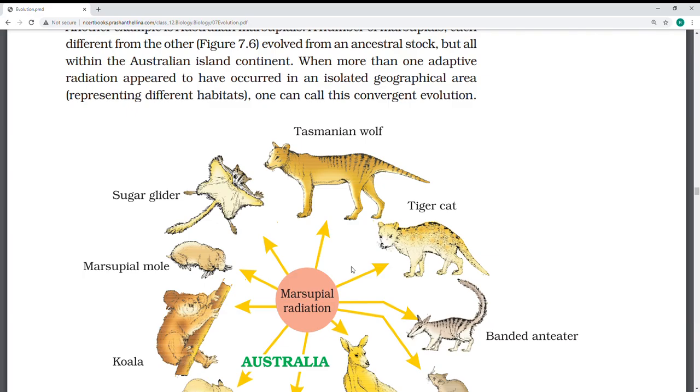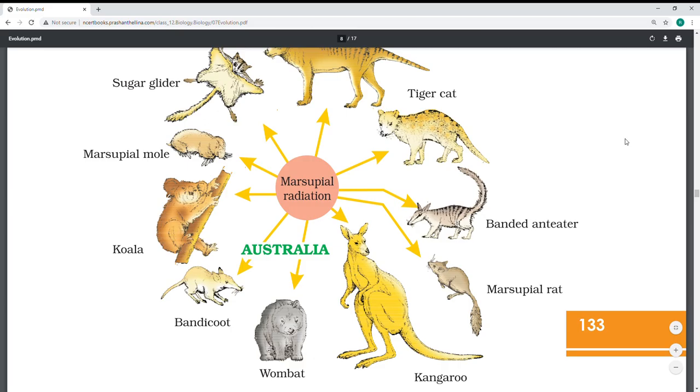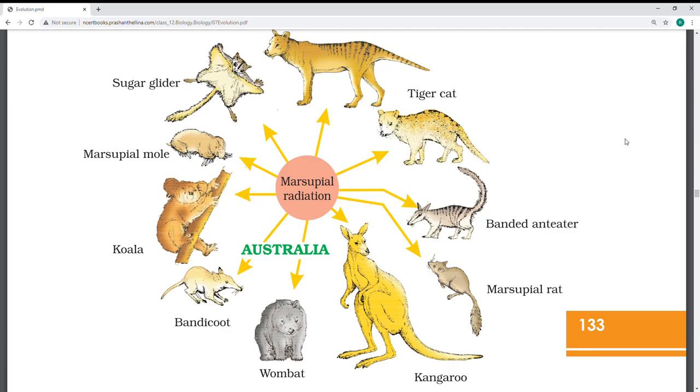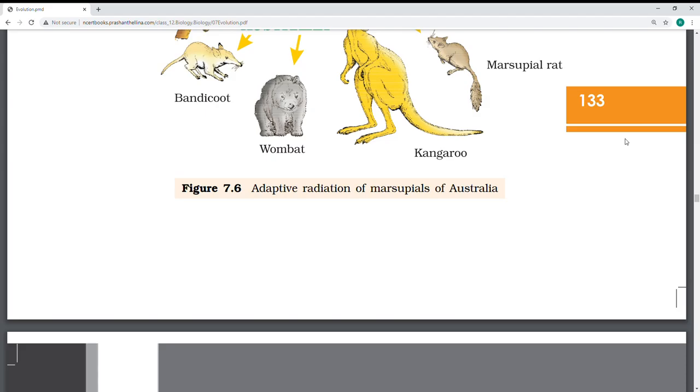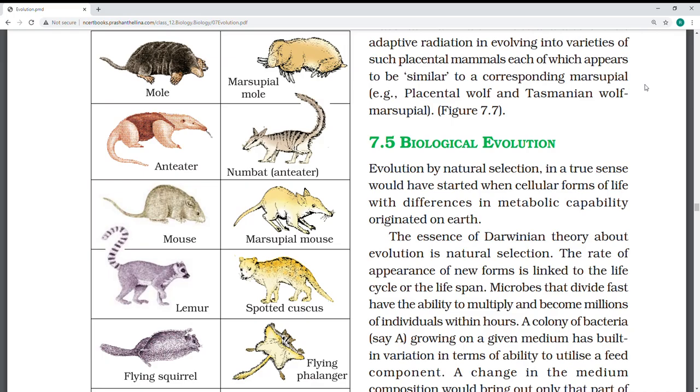If they give adaptive radiation examples, you can write these which Darwin observed. These are the Australian island continent. He has seen Tasmania - these we won't see here. But he saw tiger cat, sugar glider, koala, bandicoot, wombat, kangaroo, marsupial rat. These are all examples different from others evolved from ancestral stock. These animals which he observed are examples for adaptive radiation.